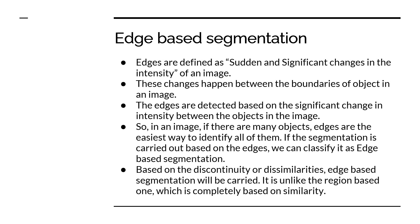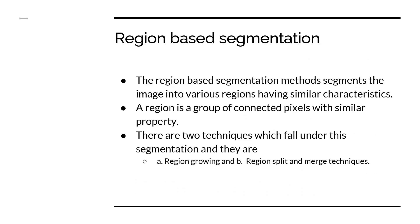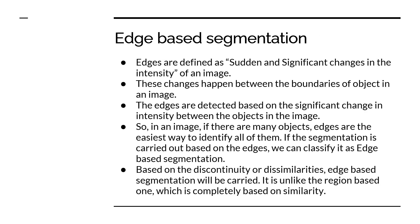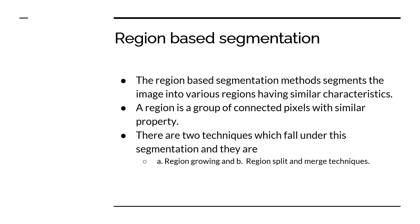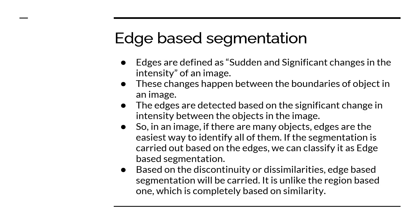Edge based segmentation is based on discontinuity or dissimilarities — unlike region based segmentation where pixels are grouped based on similarity. Here, a dissimilarity in intensity tells us that we have encountered an edge and therefore a different object. Please understand the difference: region based segmentation connects pixels sharing similar properties, while edge based segmentation is based on discontinuity and dissimilarity to identify object boundaries.